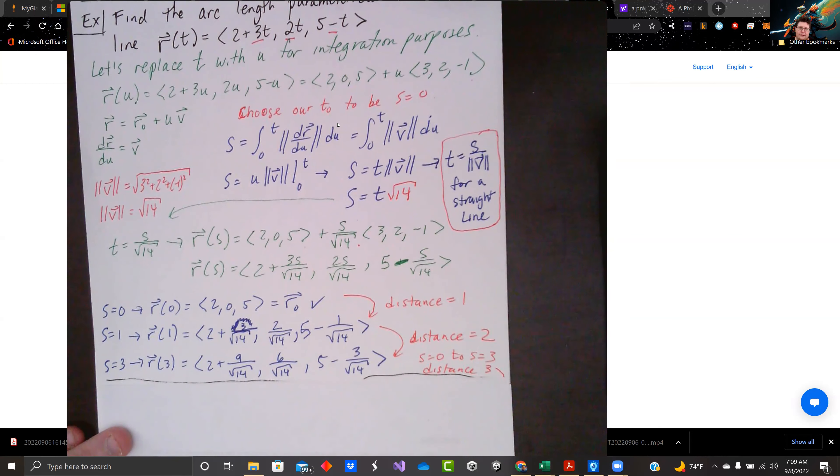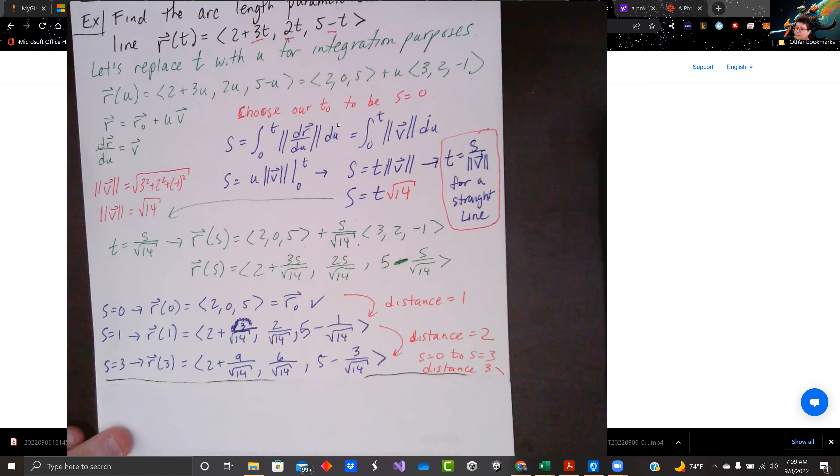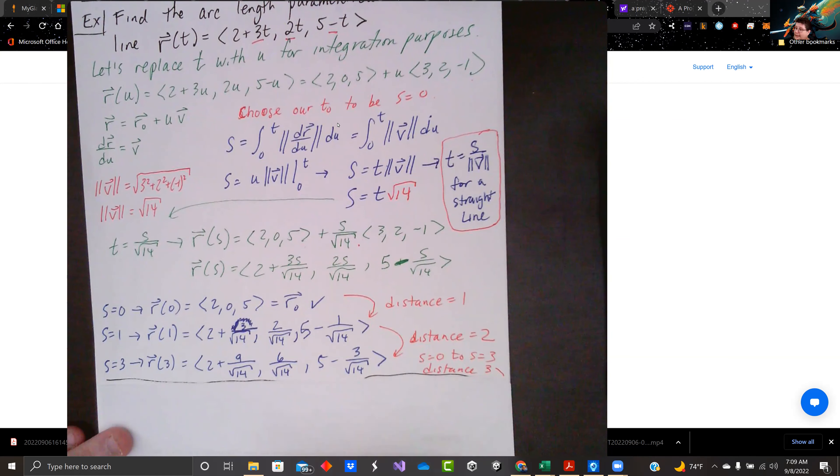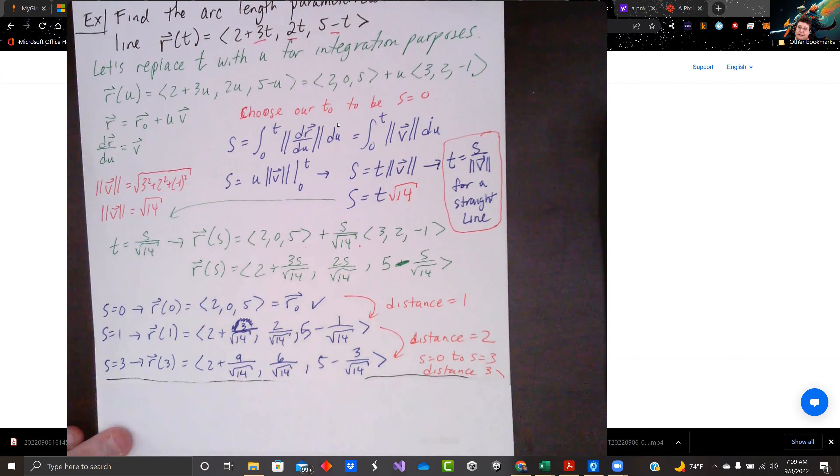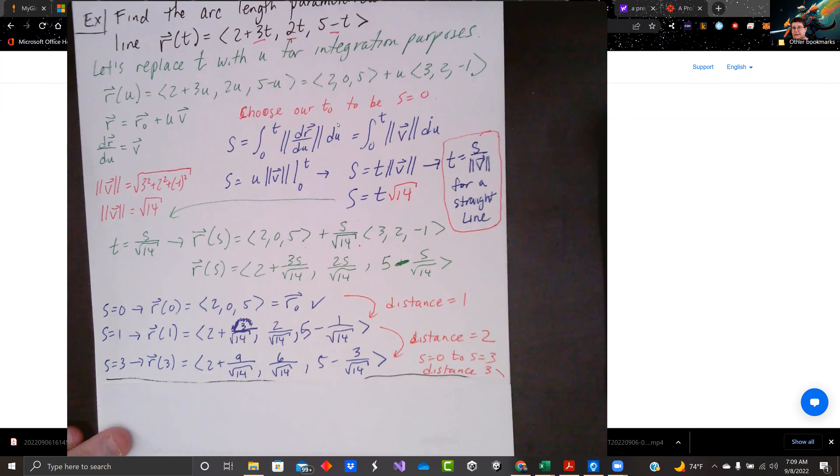Notice the time steps. If we had s equals 0, 1, 2, and 3, like here, t is not getting very big. 3 over the square root of 14 is still less than 1. So we get all these steps in less than one second.